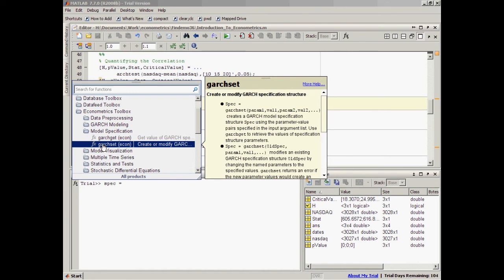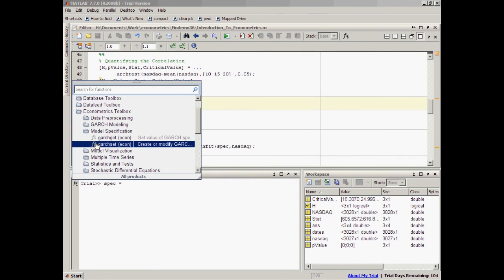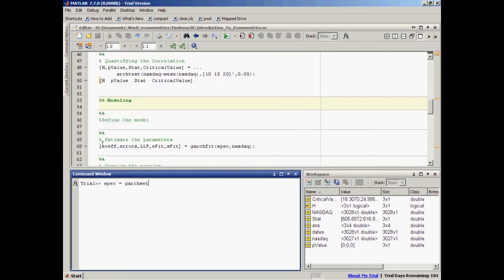Well, here I know I want to specify a model. So, I go to model specification, and I see that you can use the function garchset to create or modify a GARCH specification structure. So, well, that's what I want, and I can see more information on how to use it here. So, I'll just double click on garchset, and I'm set.